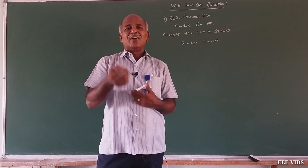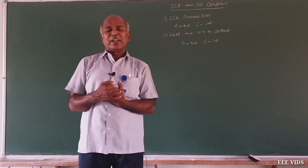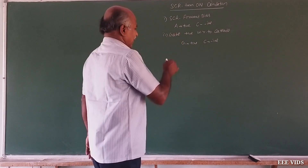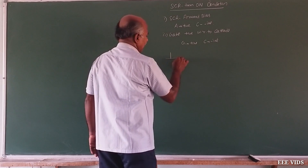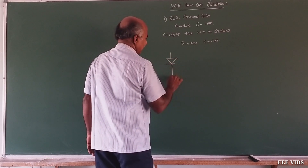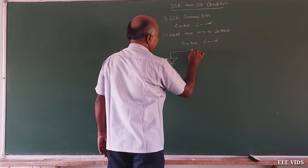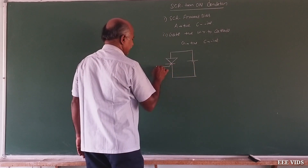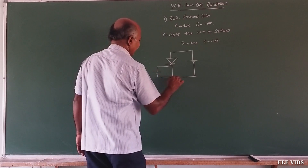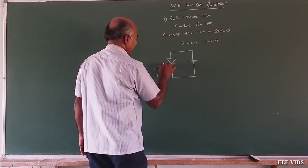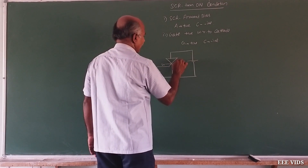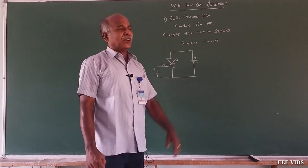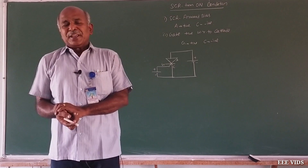SCR in the on state, we have another voltage. Now we have another circuit. So here, anode to cathode forward bias, gate positive with respect to cathode. This is a simple circuit: positive, negative, gate, cathode, anode, positive, negative. So this is the condition to turn on the SCR.